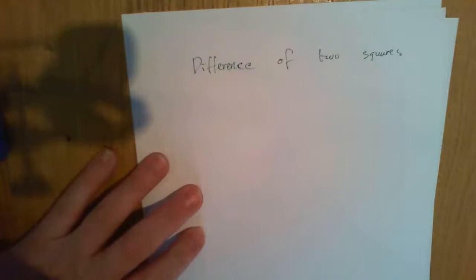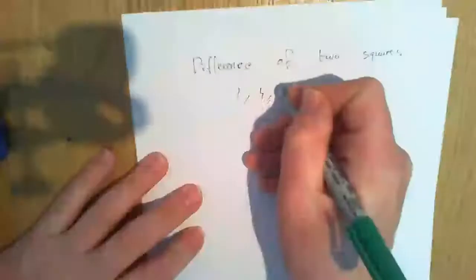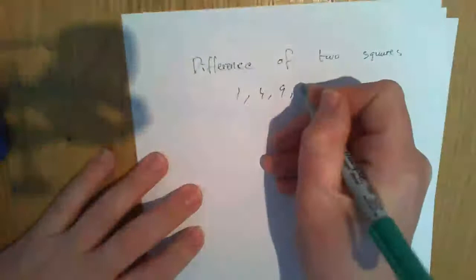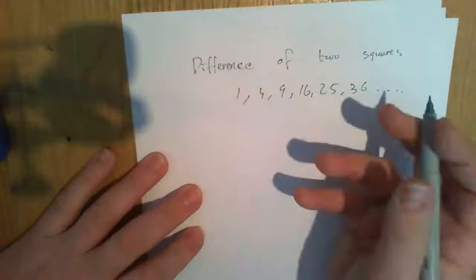The difference of two squares is a very simple concept to understand. So I take numbers like 1, 4, 9, 16, 25, 36, and so on.